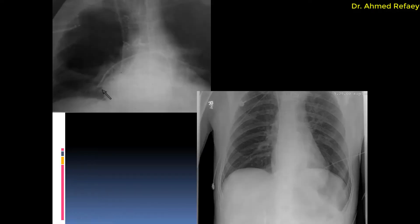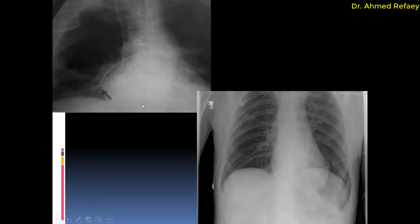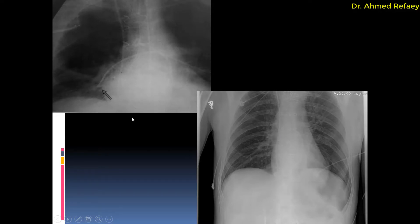This is a comparison between correct and incorrect placement: the tip should be in the proximal part of the artery, while this malpositioned example shows the tip in the distal part of the artery.